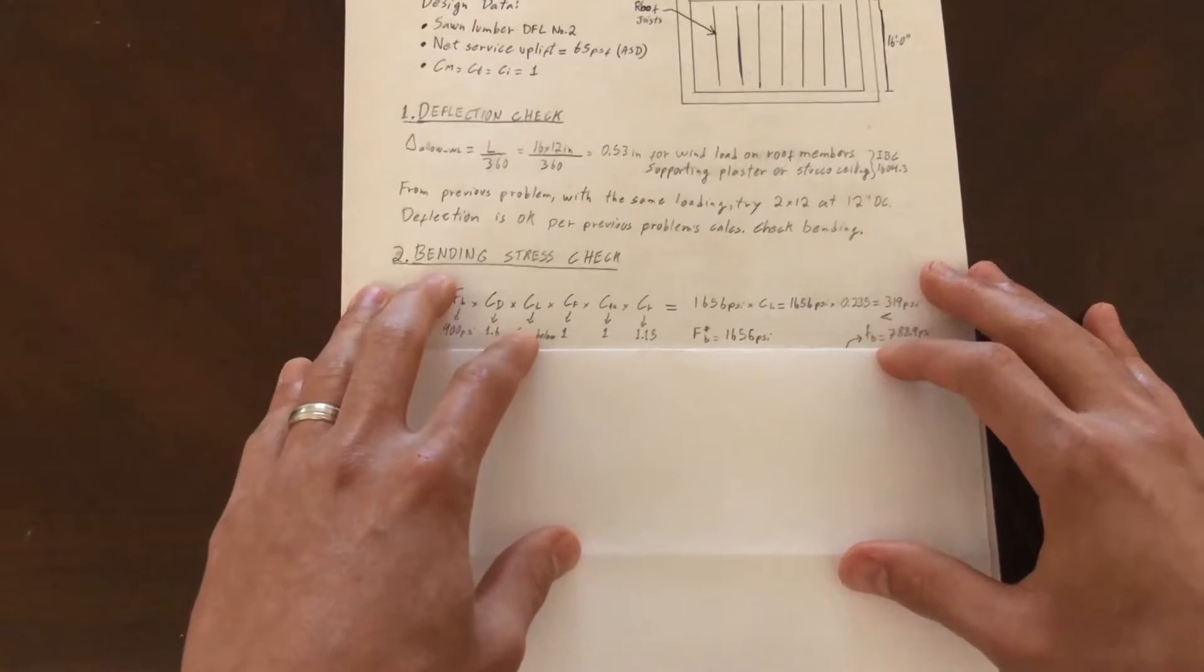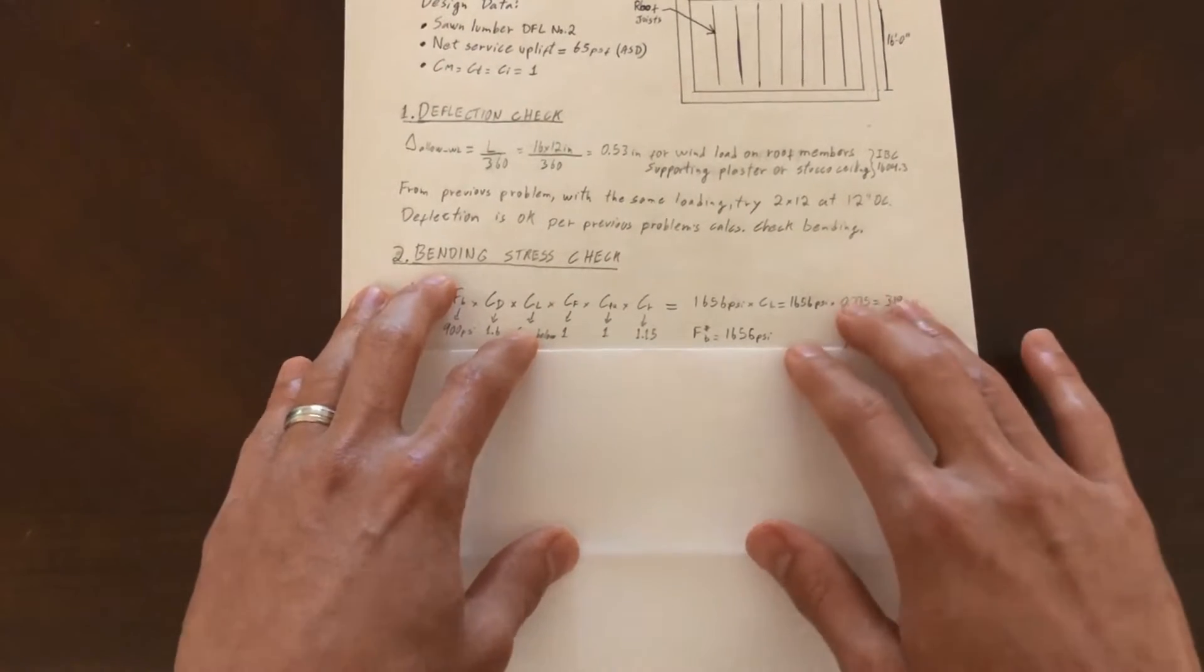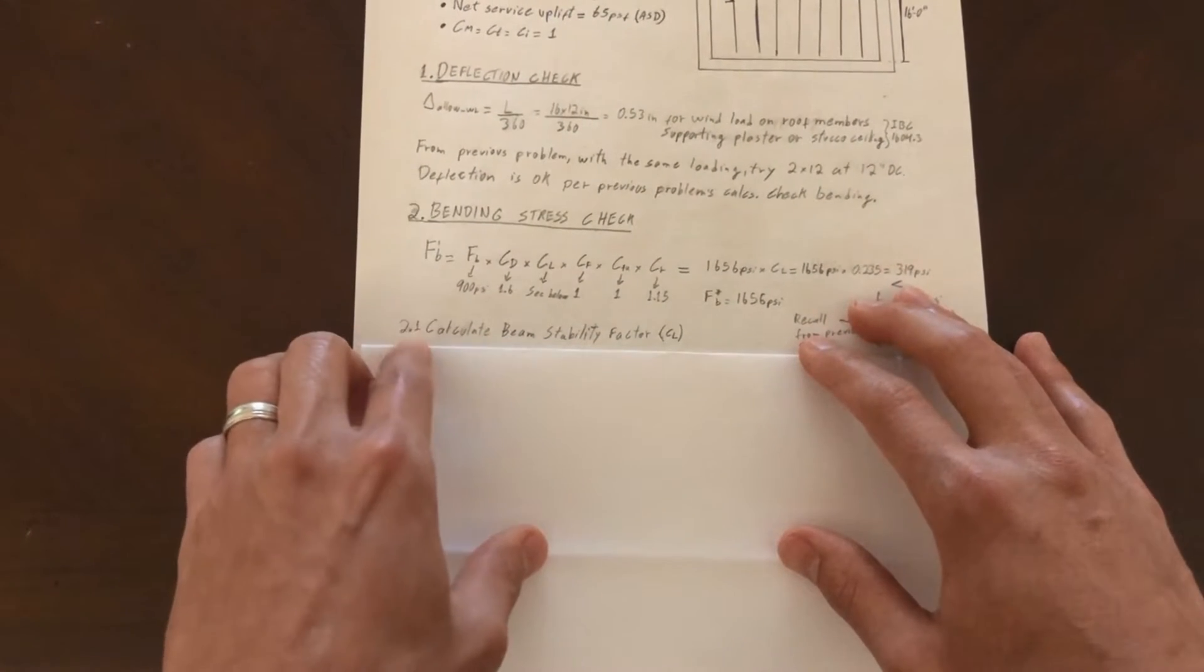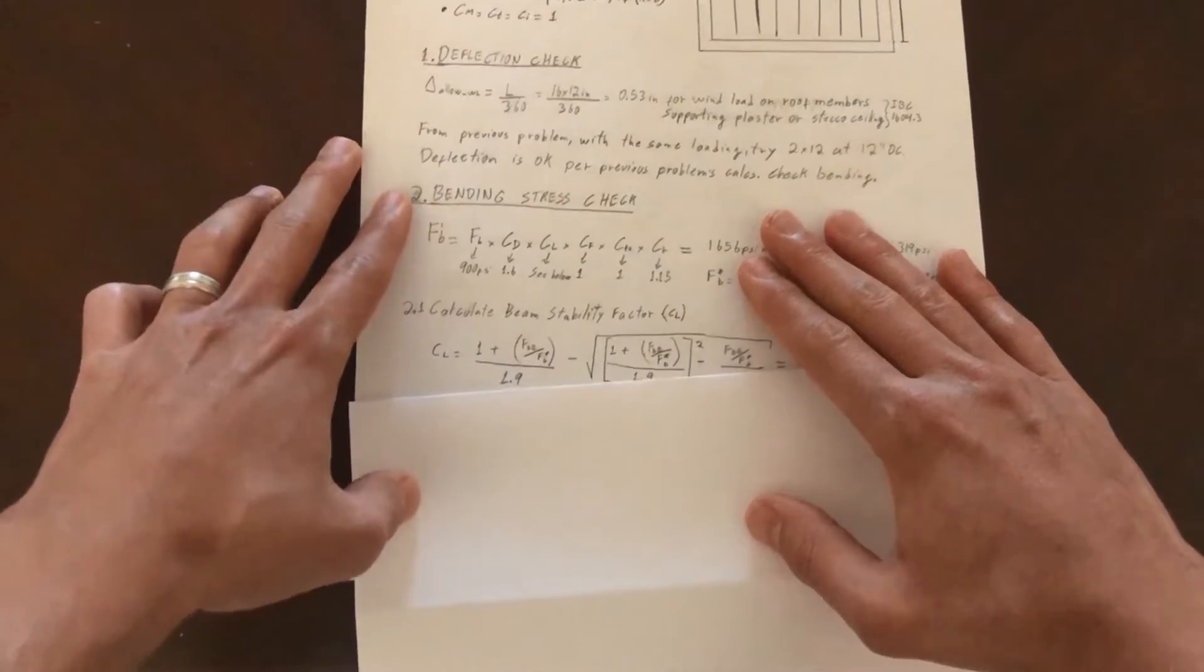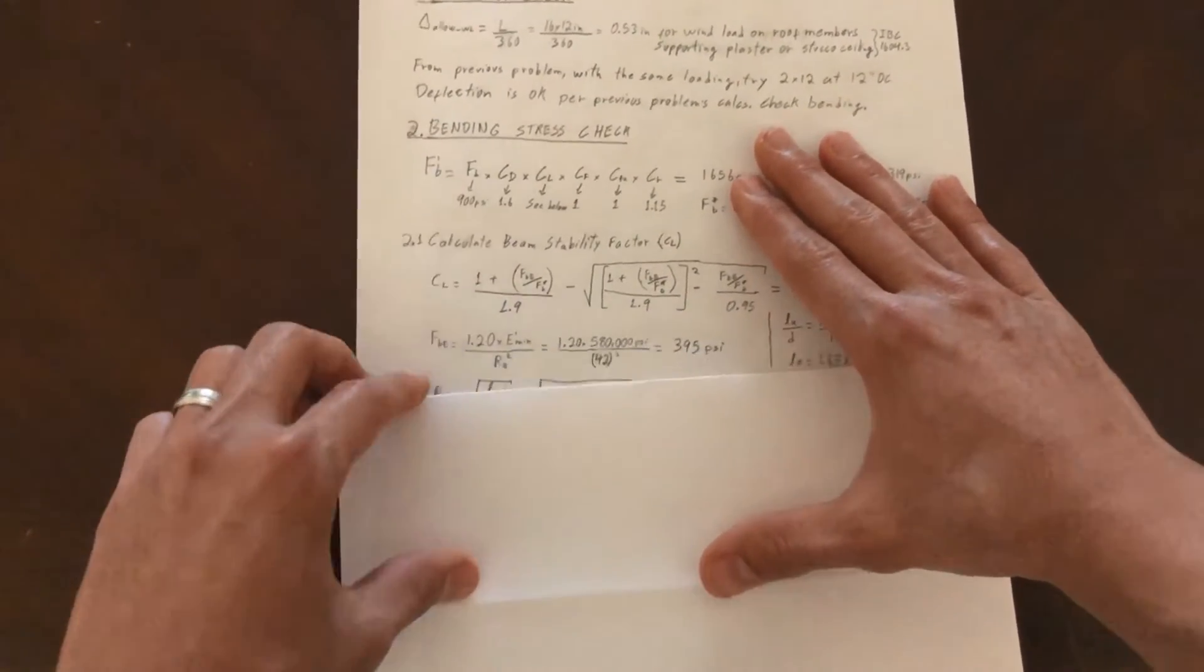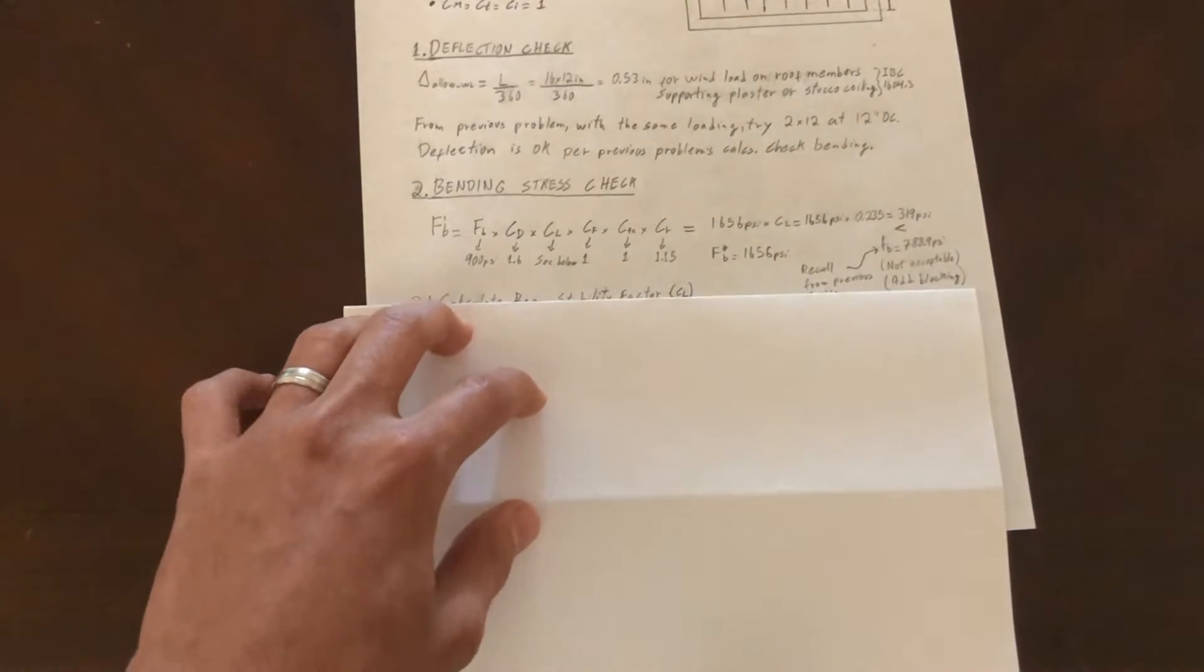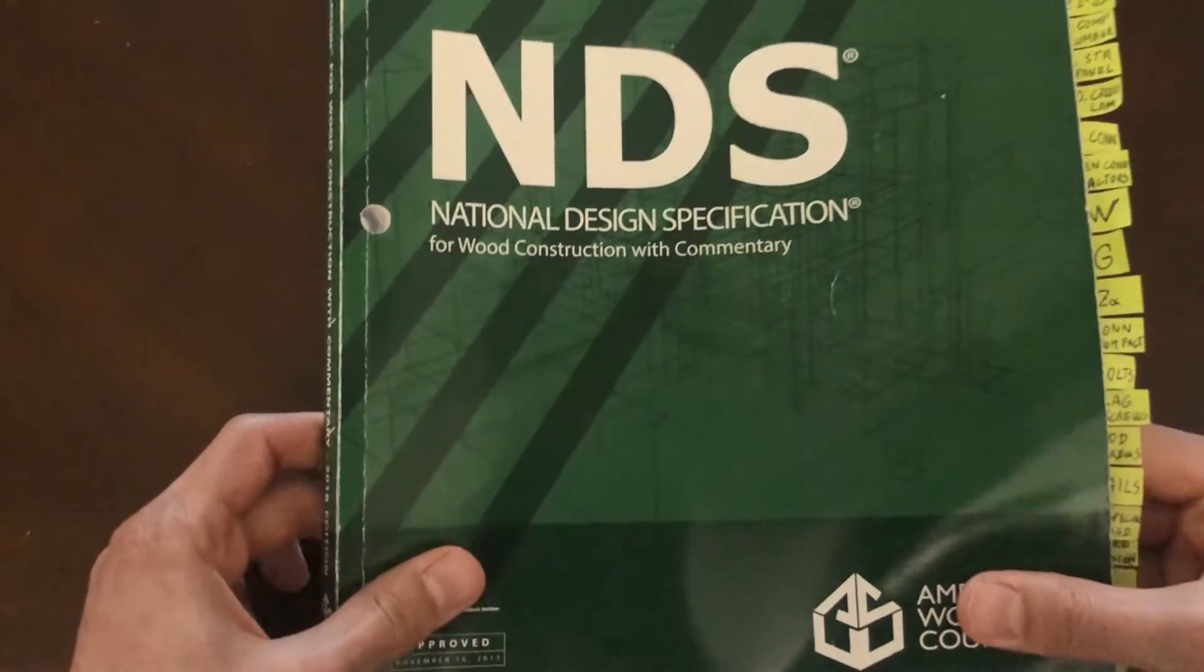Know that this is in chapter 2 - that's always where you're going to find your load factors. We see here for wind and earthquake loads, C sub D is equal to 1.6. So now that we got that out of the way, we just have to calculate C sub L.